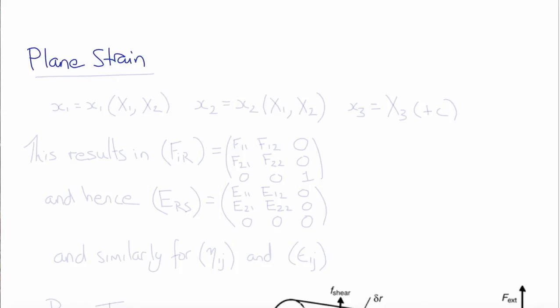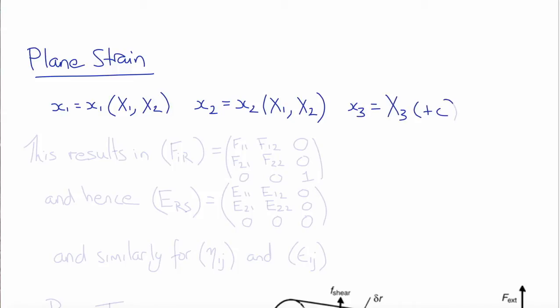Today we'll do some examples of strain fields and flow patterns using the tools that we've derived. Let's consider the example of plane strain. You'll remember we did plane stress. There's an analogous definition of a plane two-dimensional strain situation, and that's one in which the deformed coordinates, little x1, are only functions of the original coordinates, big X1 and big X2.